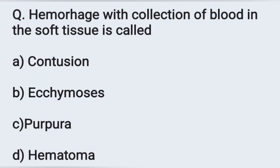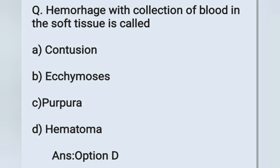Next question: Hemorrhage with collection of blood in the soft tissue is called — option A: contusion, option B: ecchymosis, option C: purpura, option D: hematoma. Hemorrhage means bleeding, so blood-related. Hemorrhage with collection of blood in the soft tissue is known as hematoma. Option D is the correct answer.